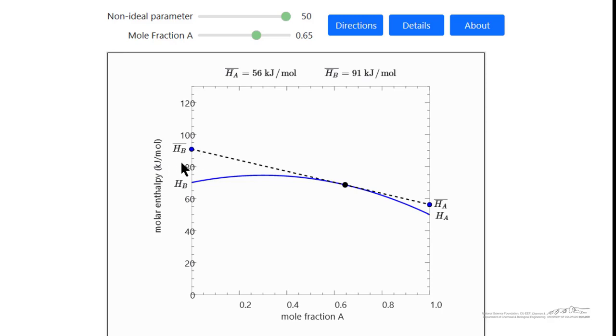And the partial molar quantity of B can deviate fairly significantly, particularly if we go to the higher mole fractions of A. The partial molar quantity is quite different from the molar quantity.